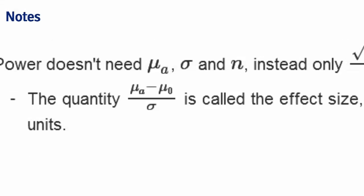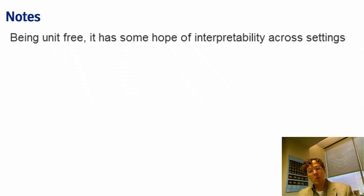And what's nice about the effect size is it's unit free. So when you subtract mu naught minus mu a and divide it by sigma, you get a unit free quantity. And that's why the effect size is very useful, because being unit free, it has some hope of being interpretable across problems.